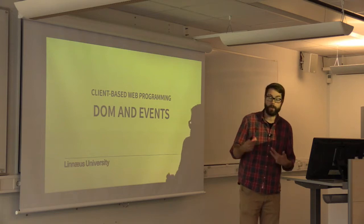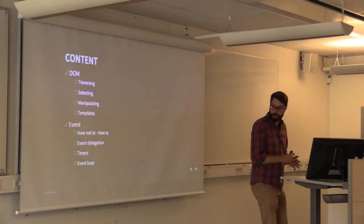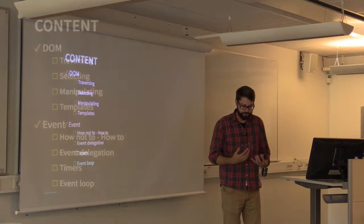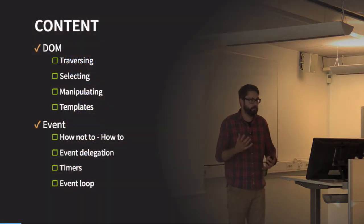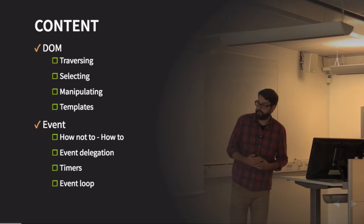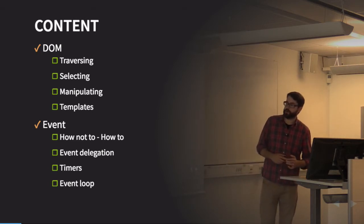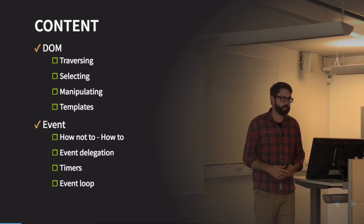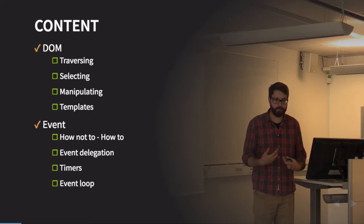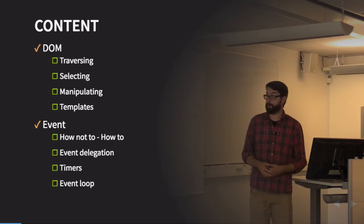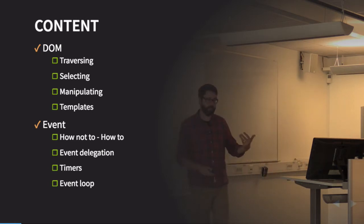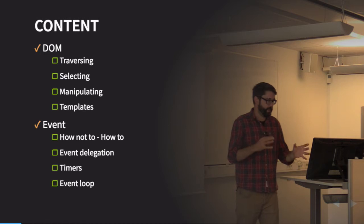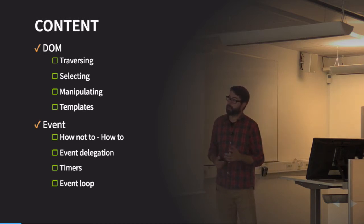We have something called an event loop that we will discuss, and the event loop is essential to understanding how this event-driven model works in JavaScript. So two parts: first part, the DOM — the API against the HTML document that we as JavaScript developers can use to manipulate web pages — and the event-driven nature: how to react on stuff the user does or things the browser does.